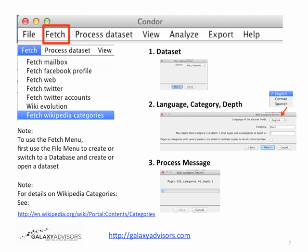Coming back to the Condor menu and clicking Fetch, one of the options at the very bottom is Fetch Wikipedia Categories. We're going to step through three fundamental windows. We assume you've either created a database or switched to one, and created a new dataset or opened one. The first thing is you're going to get a dataset to store your wiki categories in. You'll fill out options on the language, category, and depth wiki options page, and then get a process message as it retrieves those selected categories.